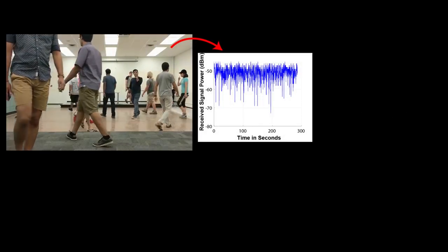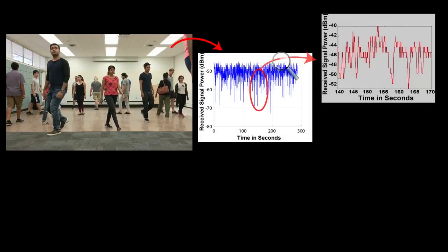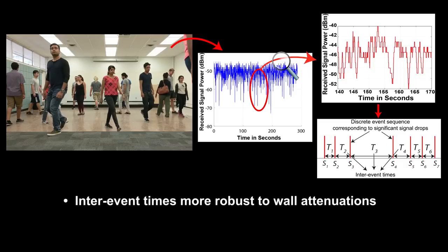Let's now see how we have enabled this. Looking at the received signal strength as people walk in the area, by zooming in we can see that people's motions can cause significant drops in signal strength. We then form the discrete event sequence corresponding to instances of significant signal drops, as well as the corresponding inter-event times. While the amplitude of the signal can be severely attenuated through walls, the inter-event times are more robust to wall attenuations. Thus, we propose to exploit them for crowd-counting through walls.